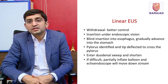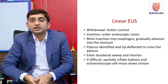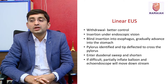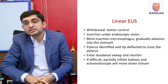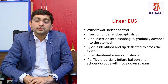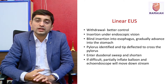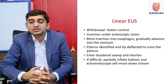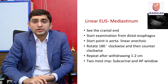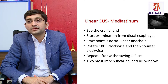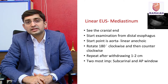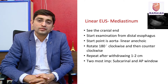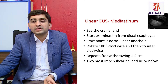For mediastinal examination, we start distally from the GE junction and slowly pull back, torquing 180 degrees between ventral and dorsal. Insert the endoscope under endoscopic vision with the air pump on, advance to the stomach, then at the GE junction turn the air pump off and begin scanning from the liver. Alternatively, start from the duodenum, advance through the pylorus, sweep, and pull back. Note where the cranial end is on the US monitor; from the distal esophagus the aorta appears as a linear anechoic structure with significant flow on Doppler.